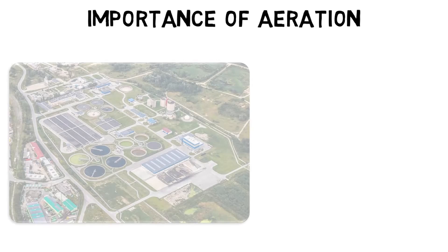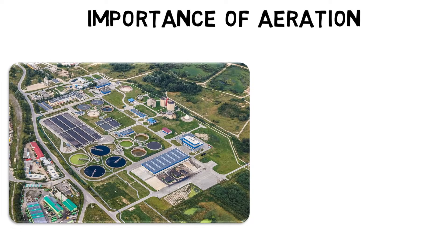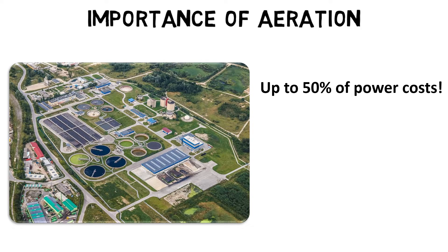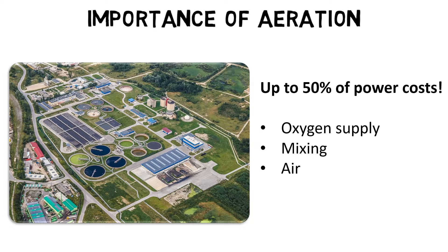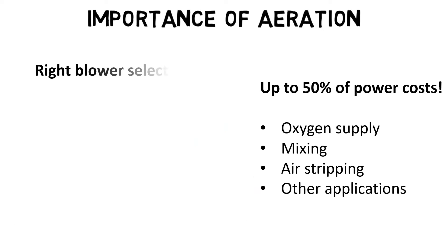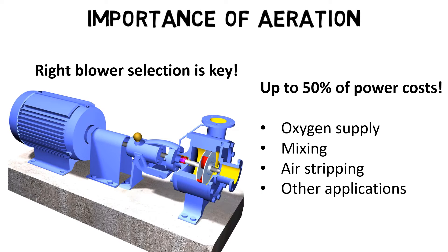Aeration is a major component of most wastewater treatment processes and accounts for close to 50% of all power costs at WWTPs. It is used for oxygen supply of microorganisms, mixing purposes, air stripping, and other applications. Therefore, the selection of the right blower type and size is the key for proper functioning of wastewater treatment processes and energy savings.